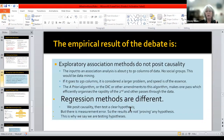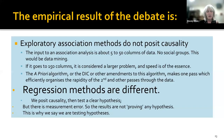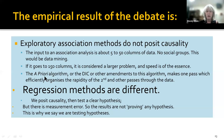Exploratory association methods usually do not claim causality. They say X is associated with Y, or X can predict Y, or the information in X can predict Y — which is useful, aiming at immediate usefulness. The input to the association is five to 50 columns of data with no social groups. If it goes to 150 columns, you're getting into a large problem because of the number of permutations — it's not the number of rows but the number of possible permutations of the item sets. The apriori algorithm was a solution developed in 1994 for solving this.